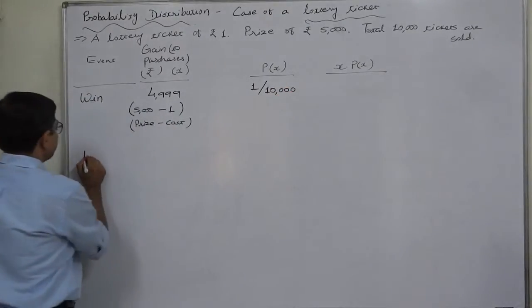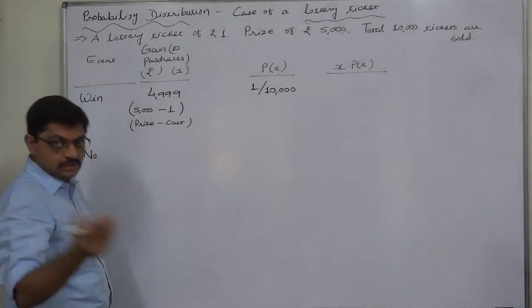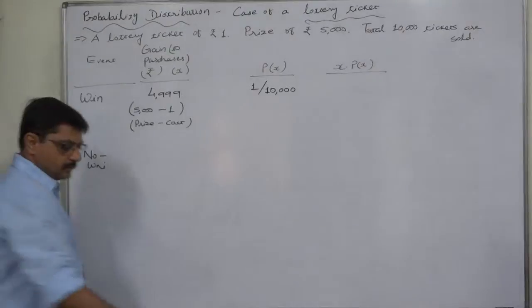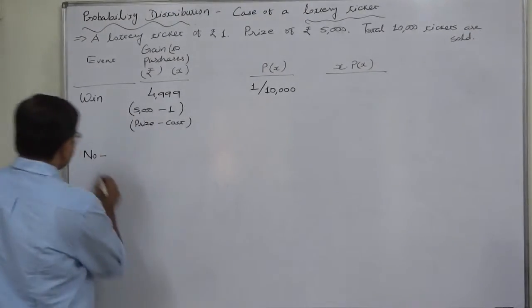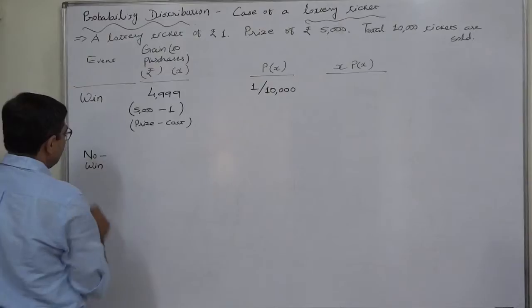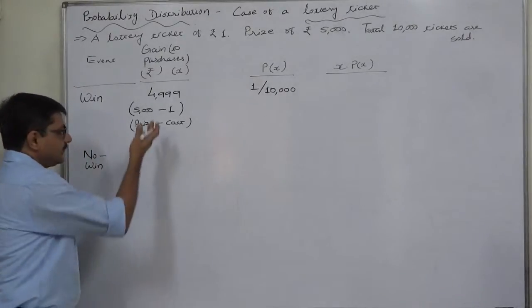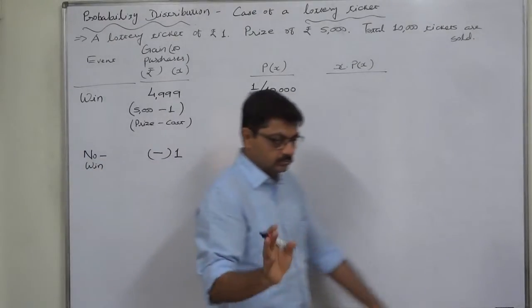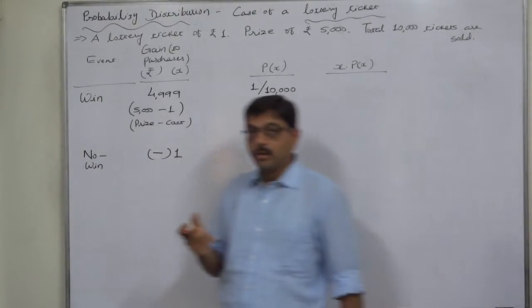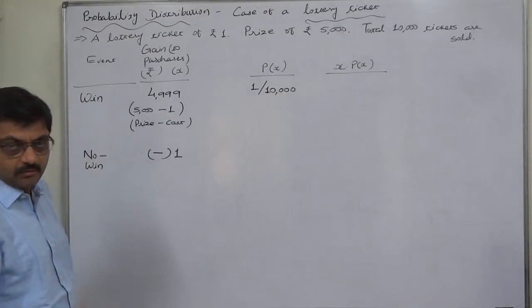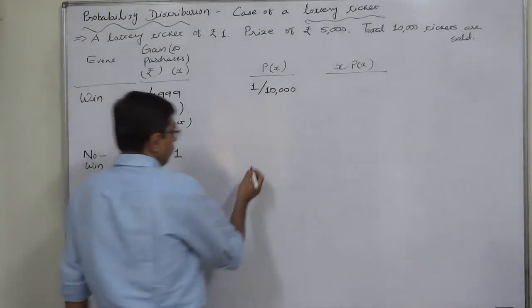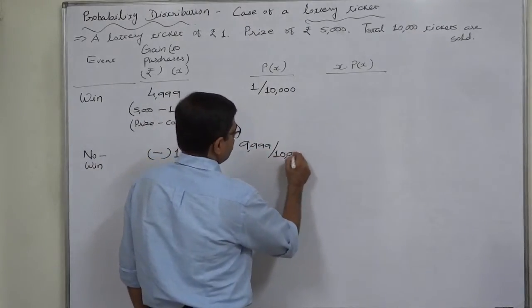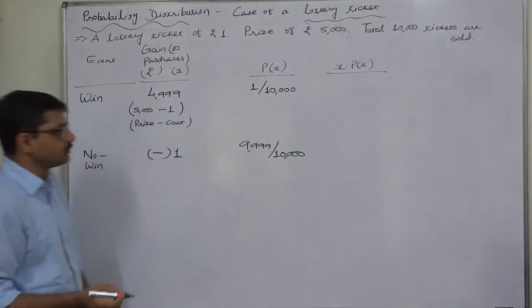Similarly, another possibility, mutually exclusive, is no win. If the purchaser of the ticket doesn't win anything, then what will happen is one rupee has gone. That means loss of only one rupee, because per ticket cost is one rupee. And what is the possibility? Out of 10,000 tickets, on 9,999 this is going to happen.